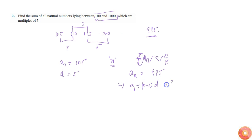That implies an is simply a1 plus (n-1) times d is equal to 995. So 105 plus (n-1) times 5 is equal to 995. So that implies (n-1) is equal to 890 by 5.